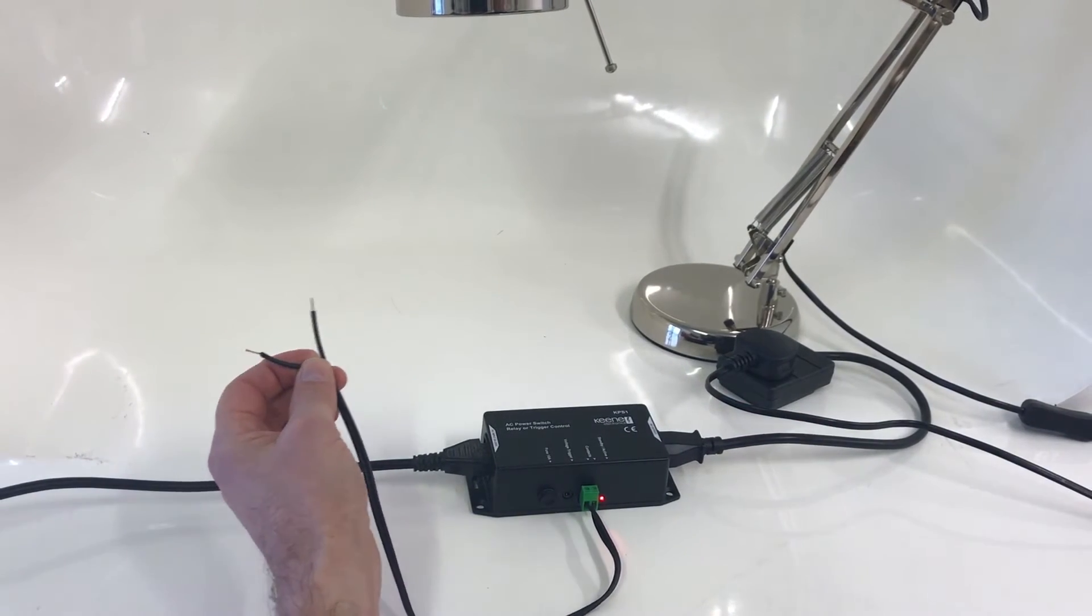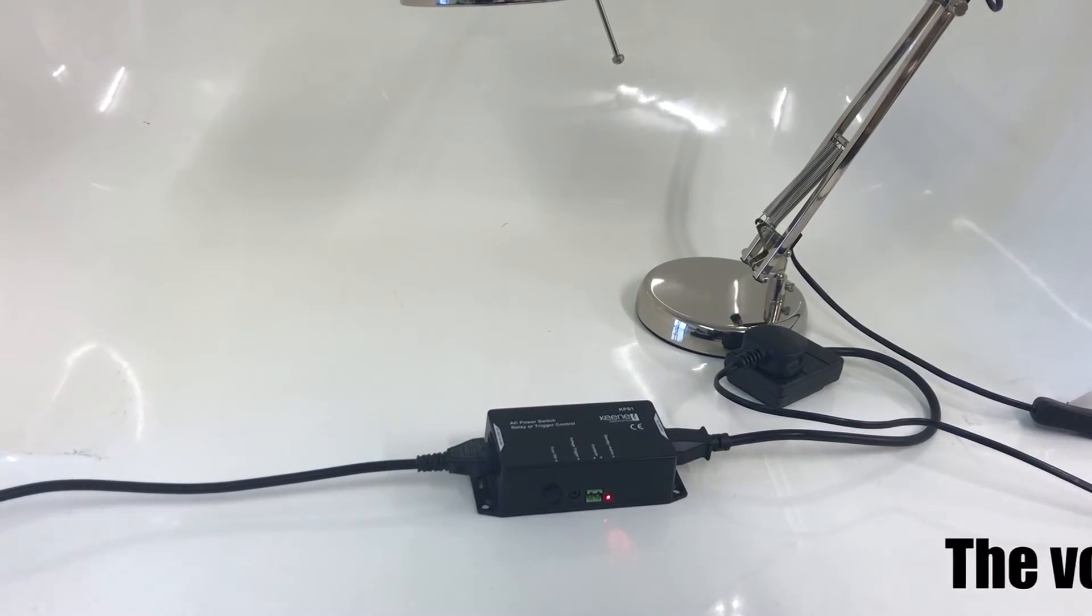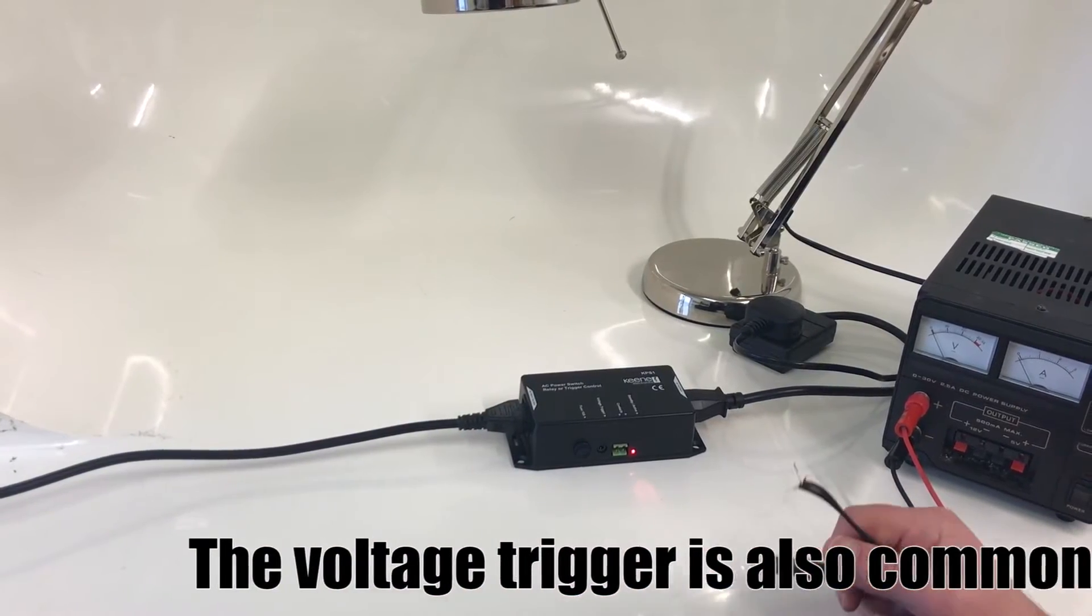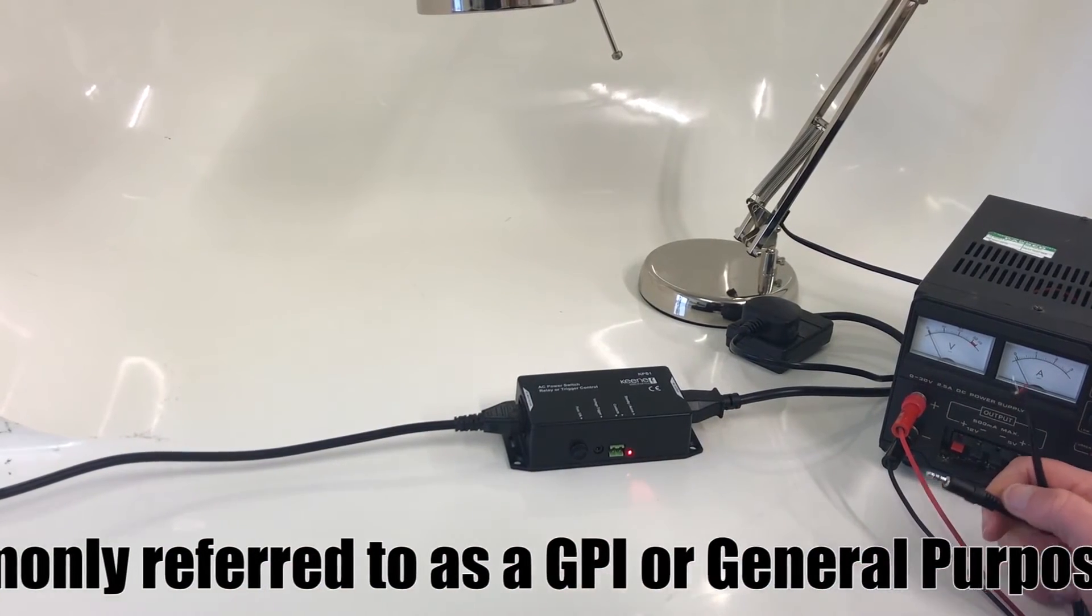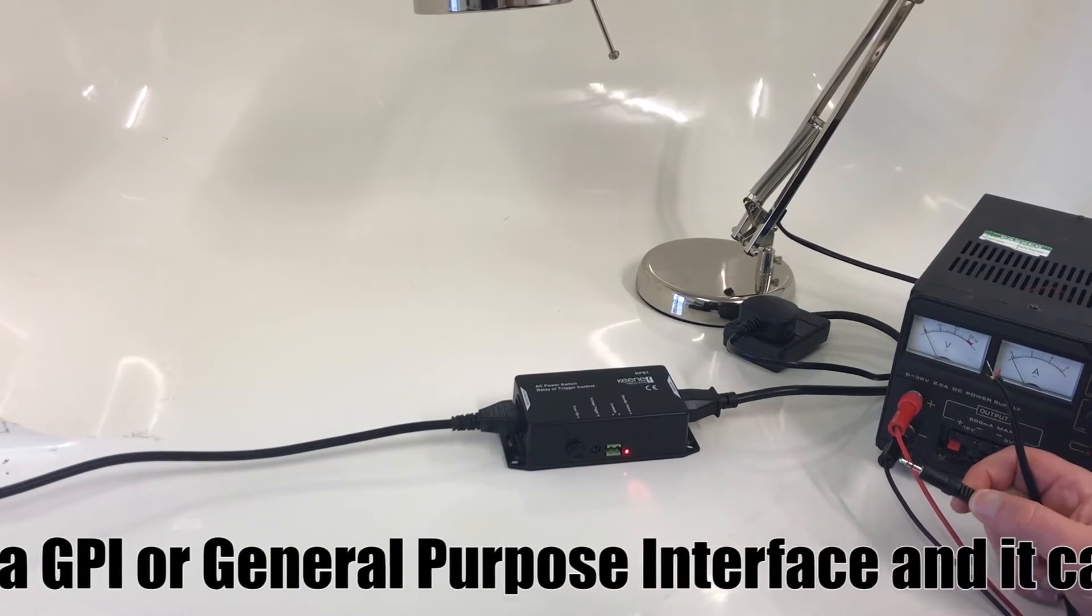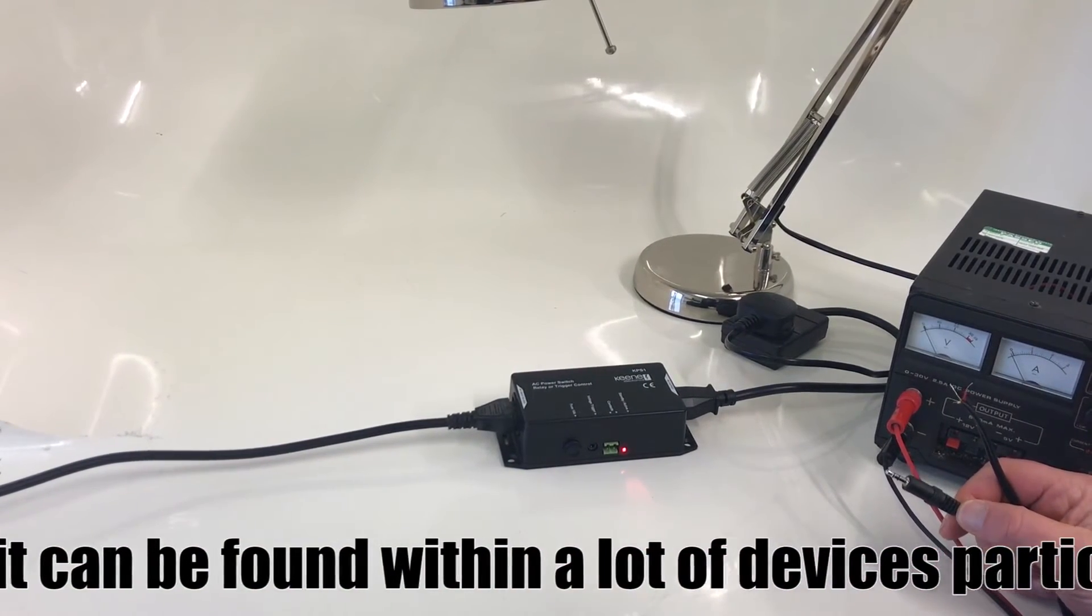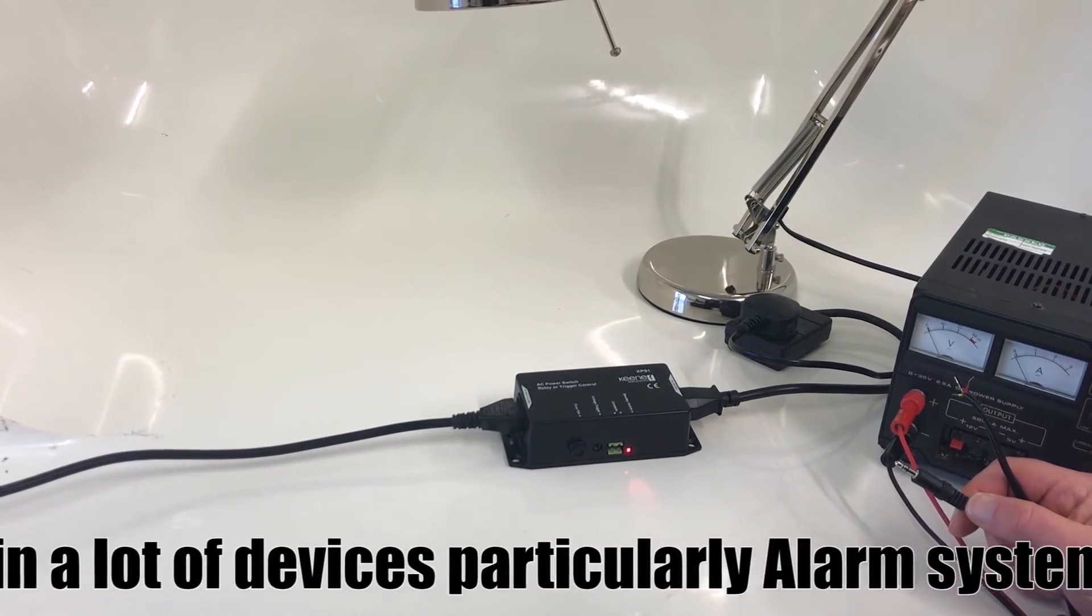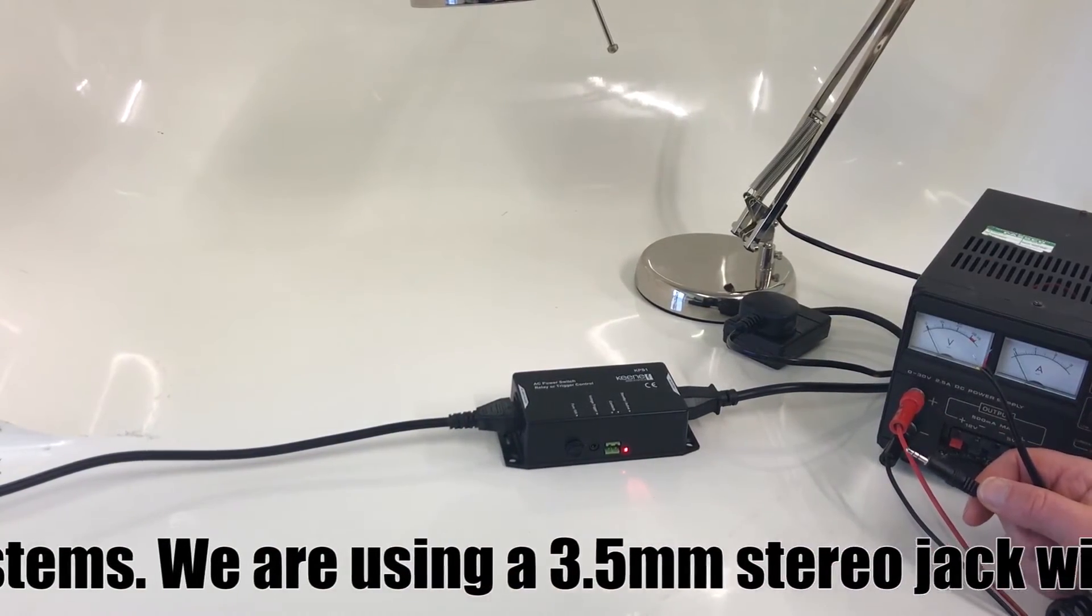So that's the contact closure side of it. Just quickly talk about the voltage trigger as well. It's commonly referred to as a GPI or general purpose interface, and it can be found on a lot of devices, particularly alarm systems. They have a zero voltage output that goes high when an event is triggered. And you can use that trigger to then switch whatever it is that you want to control.